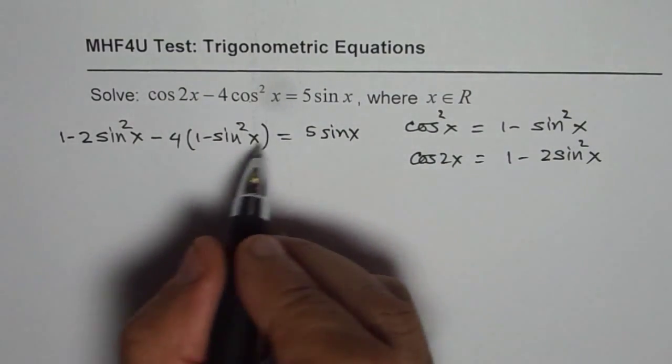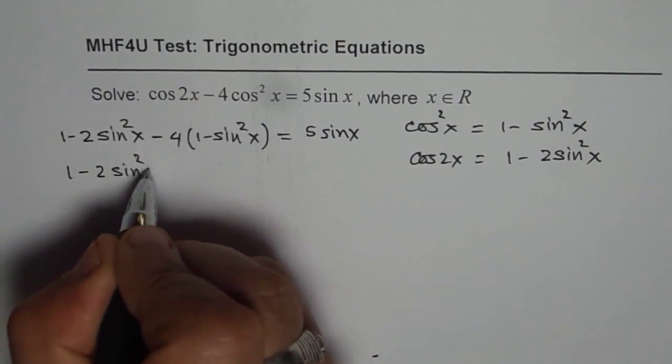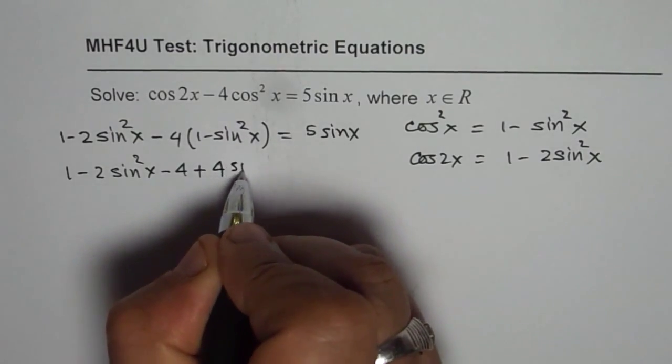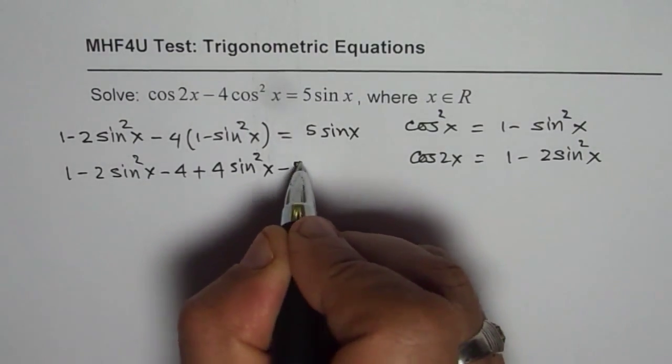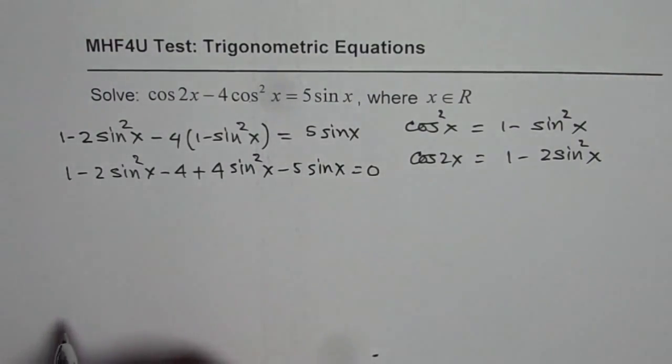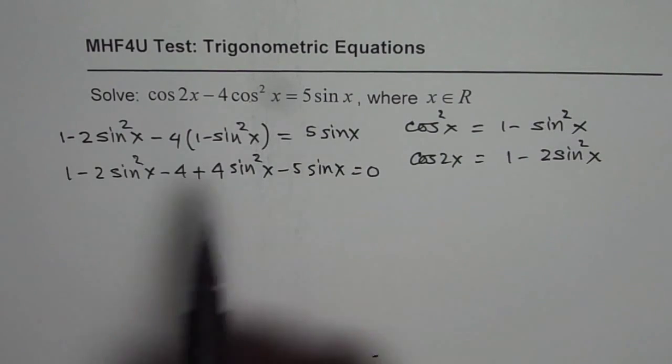Let us open this bracket and simplify. We have minus 2 sine square x minus 4 plus 4 sine square x minus 5 sine x. Let me bring them to one side, equals 0.